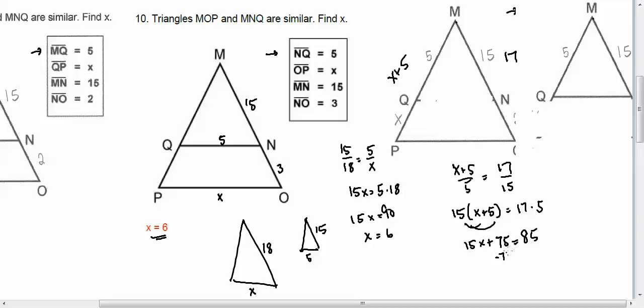Then subtract 75 from both sides, and I'm left with 15X equals 10, so X is equal to 10 over 15. 10 divided by 15, and I'm getting 2 thirds.